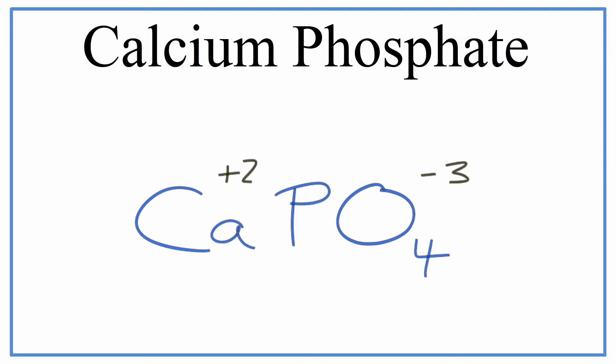So here's my CaPO4. I have my charges written. The first thing I usually do is something called the crisscross method. So I take the minus three, I put it down here, and I put the plus two down here. And because the two applies to this whole polyatomic ion, I do need to put parentheses there. And then I'll remove the charges. And now I have the chemical formula for calcium phosphate.